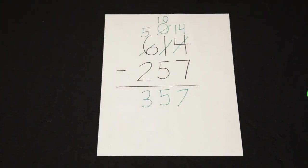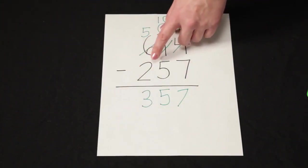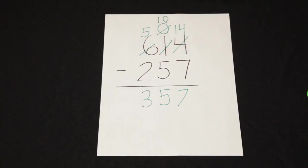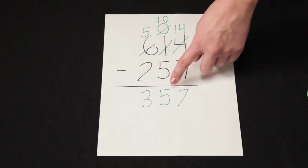So when I have 614 and I subtract 257, my answer is 357.